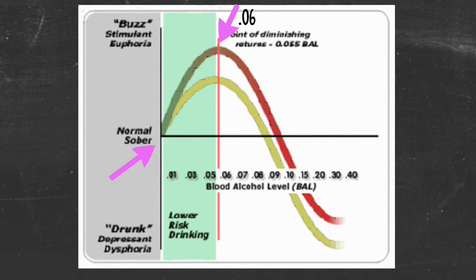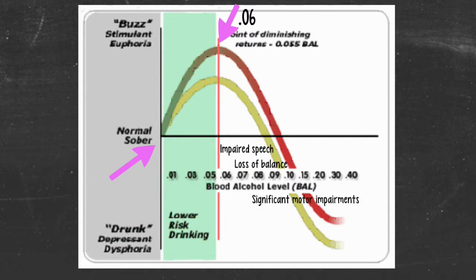People want to keep feeling this good throughout the night, so they keep drinking to maintain the feeling. But really, people begin to overconsume and cause their BAC to rise, pushing them down into the negative effects of drinking, which are impaired speech, loss of balance, significant motor impairments, blurred vision, disorientation, passing out, and even death.